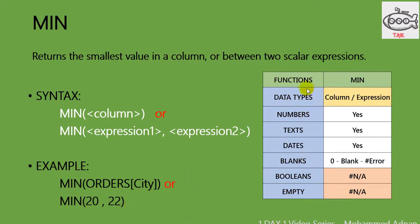On the right side I have given a table. These are the functions and on the left side is the data type: numbers, text, dates, booleans, and empty. For MIN, you can use a column or expression. Numbers are accepted. Text is also accepted. Dates are also accepted. When comparing expressions, blank is treated as zero. If both arguments are blank, it returns blank. If any one of the values is empty or boolean, it will throw an error.